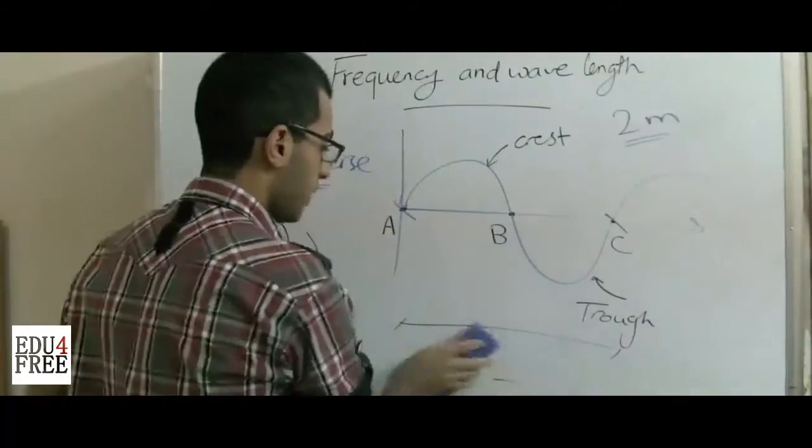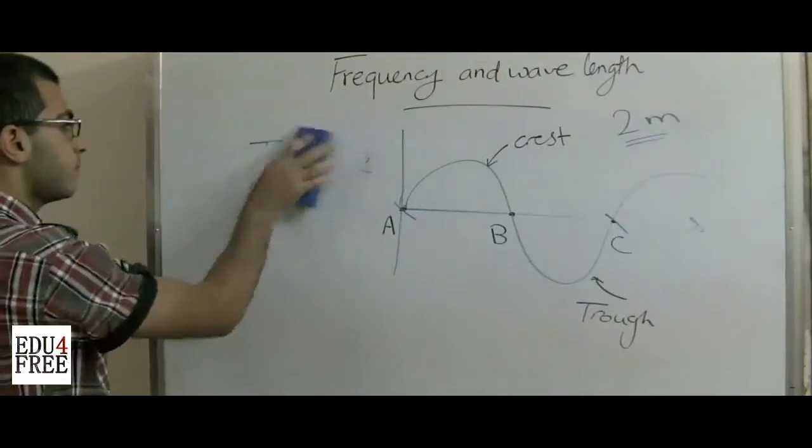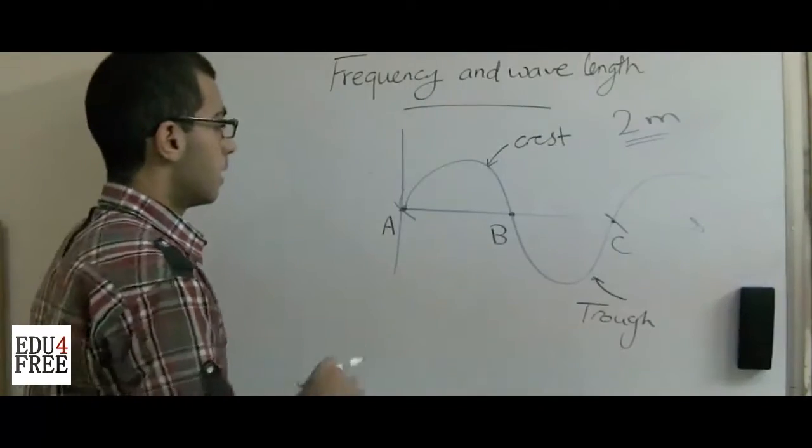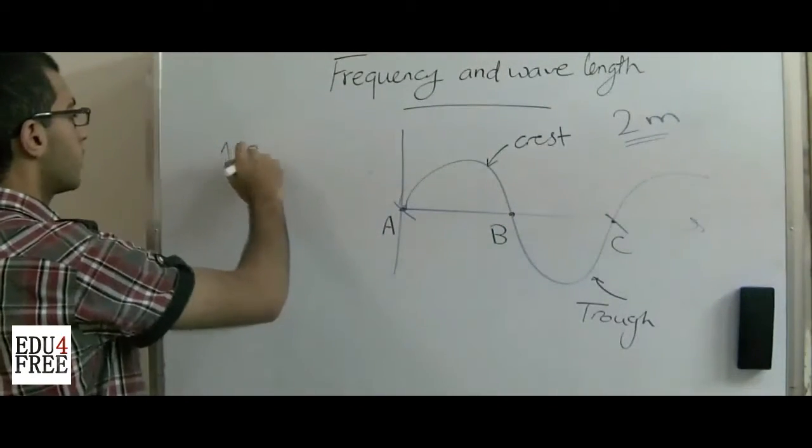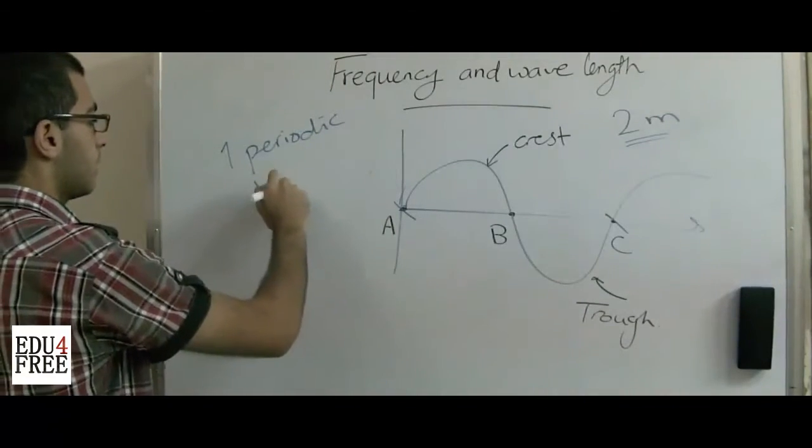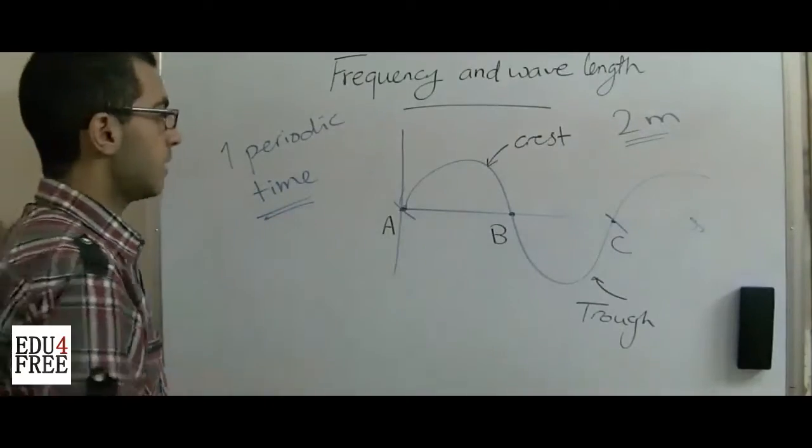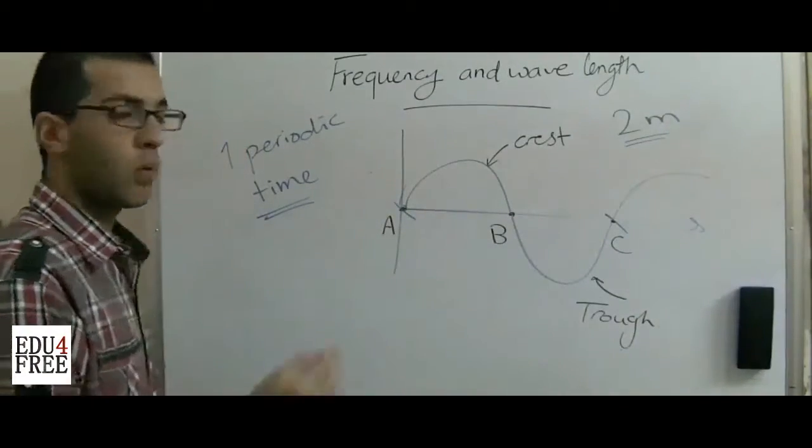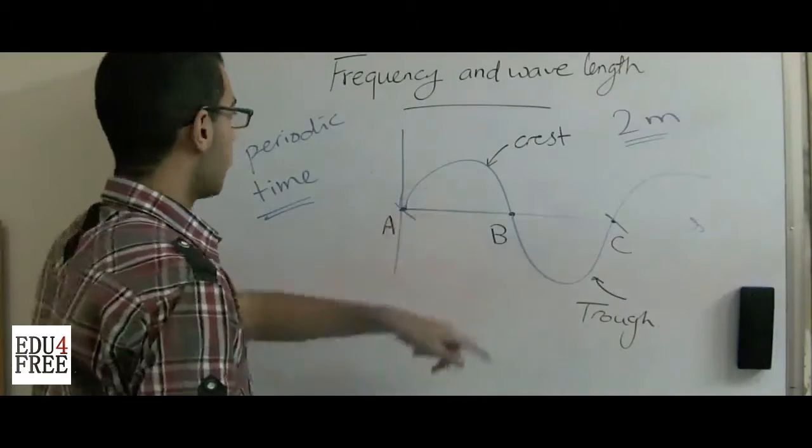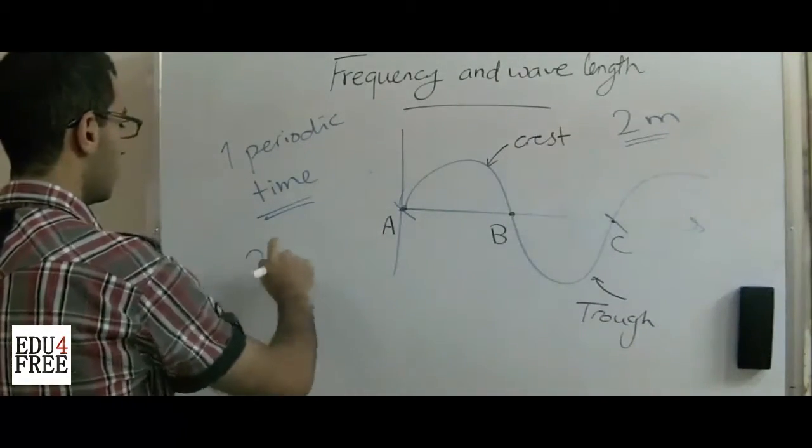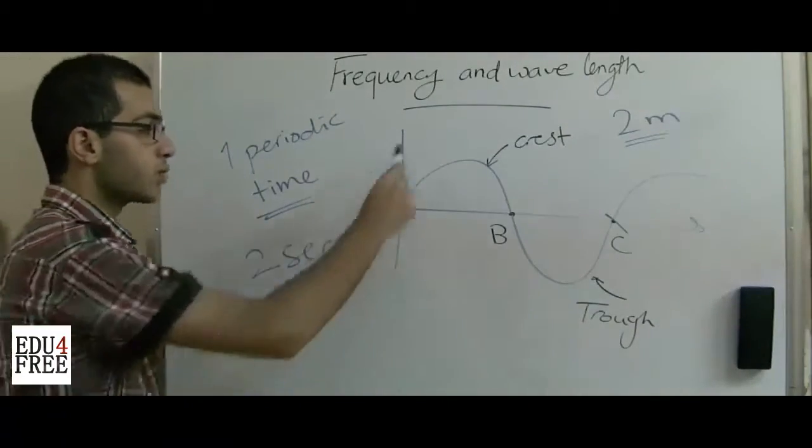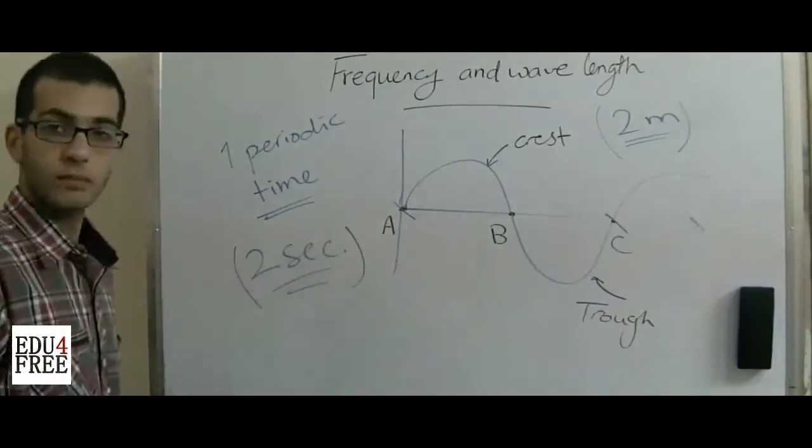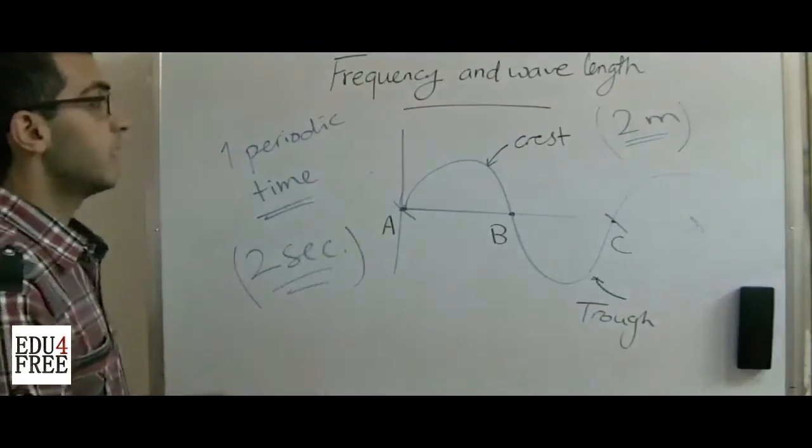Here is also something that we must know. The wavelength may be also defined as the distance or the displacement covered by the wave in one periodic time. The periodic time is the time needed by the wave motion to make one complete oscillation. So if we say that the periodic time of this wave is two seconds, this means that this wave covers the distance of two meters, which is the wavelength, in two seconds.